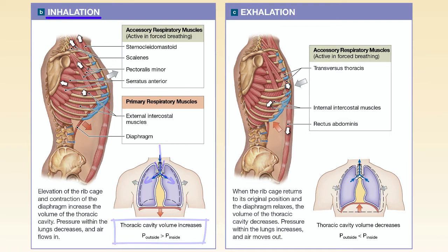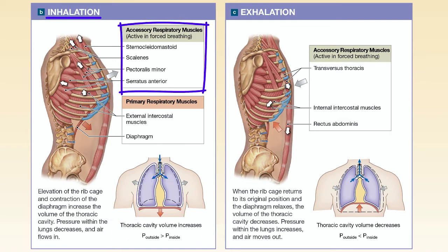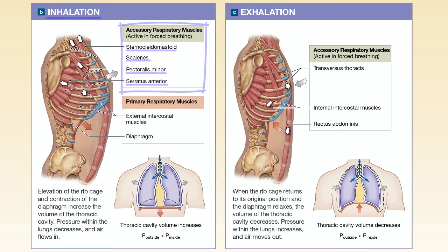When you take in a deep breath, accessory inhalation muscles — such as the sternocleidomastoid, scalenes, pectoralis minor, and serratus anterior — help elevate the ribcage further.